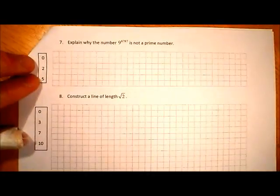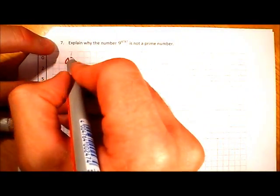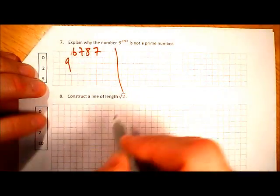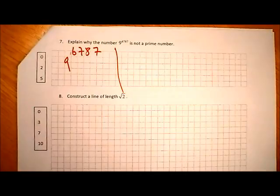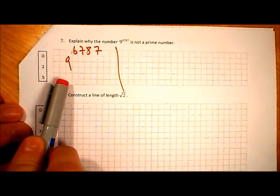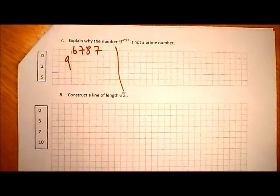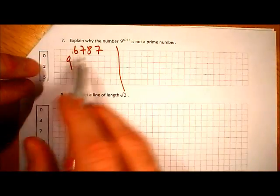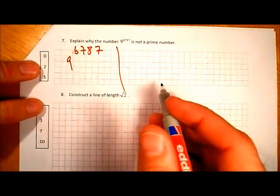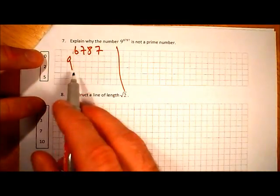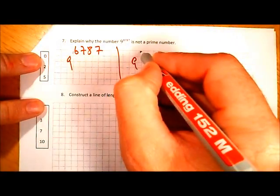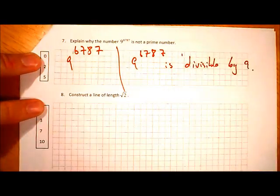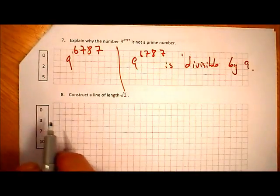Question 7: explain why 9 to the power of 6787 is not a prime number. A prime number is only divisible by itself and one. Any number that is 9 to the power of something is divisible by 9 — for example, 9 squared is 81, which is divisible by 9. So 9^6787 is divisible by 9, and therefore it is not a prime number. It is also divisible by 3.